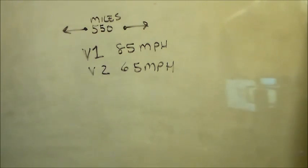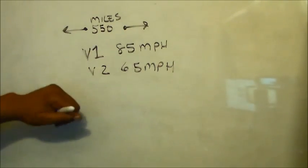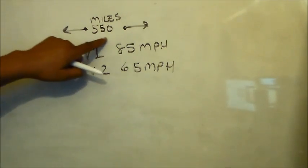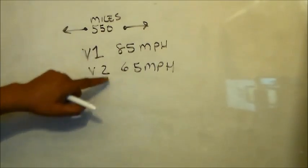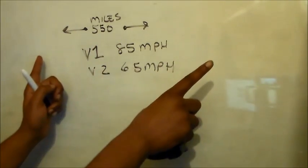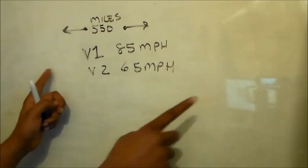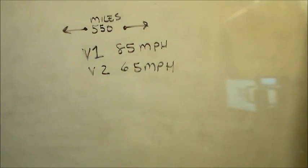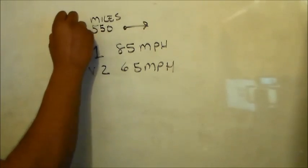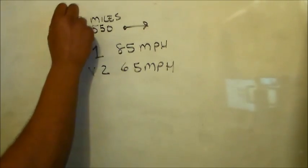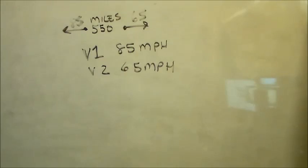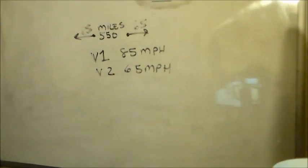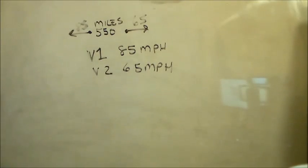The first type of question we're running into is a situation where we have two vehicles moving at two different speeds, and we want to find out how long it's going to take for these two vehicles to get 550 miles apart. We see vehicle one moving in one direction, vehicle two moving in another direction — this one moving at 85 and this one at 65 miles per hour.